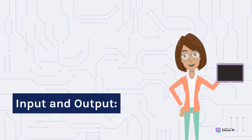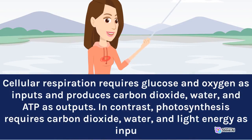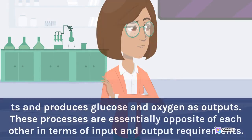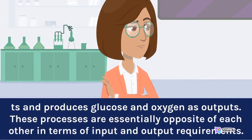Input and Output: Cellular respiration requires glucose and oxygen as inputs and produces carbon dioxide, water, and ATP as outputs. In contrast, photosynthesis requires carbon dioxide, water, and light energy as inputs, and produces glucose and oxygen as outputs. These processes are essentially opposite of each other in terms of input and output requirements.